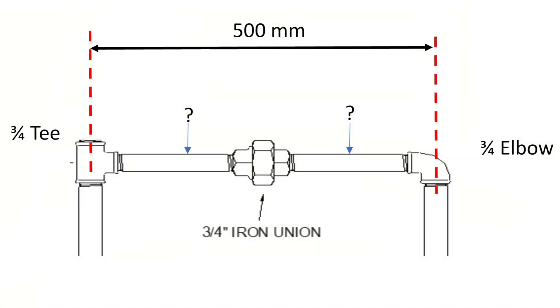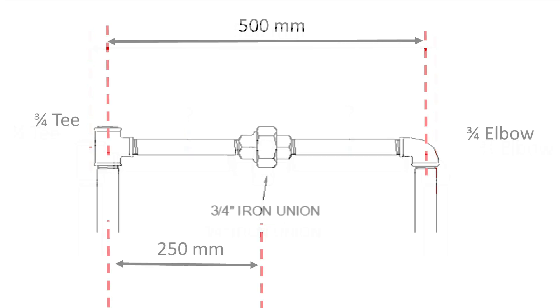Right, now let's have a look at another scenario using three-quarter pipe with a union in the middle. So how long do we have to cut the two pieces of pipe so they are in equal length? Okay, first, 500 divided by 2 equals 250mm.